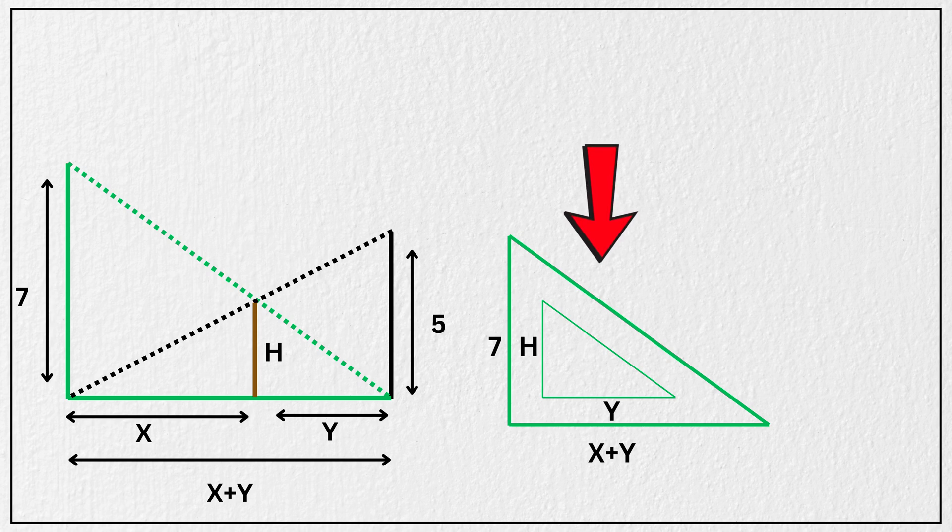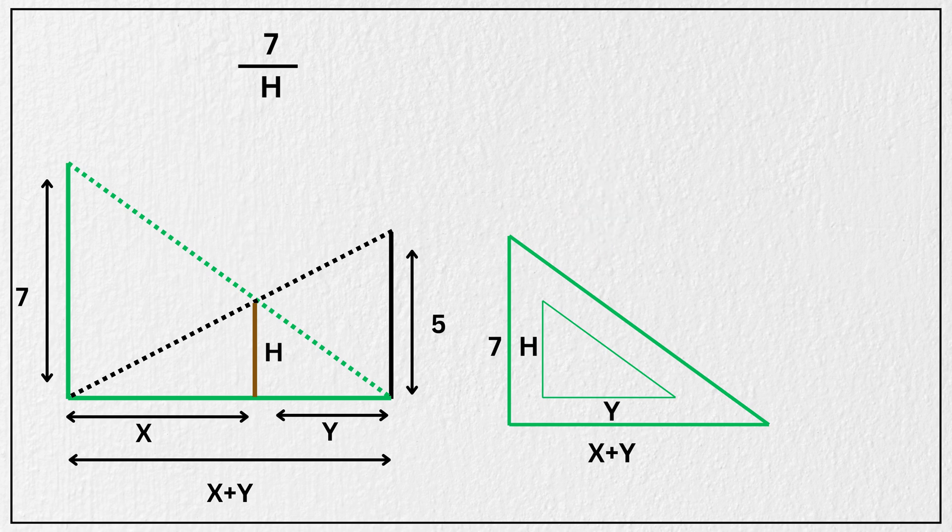As these two triangles share the same angles, they are similar. So we can write a proportion as, 7 divided by h is equal to x plus y divided by y.